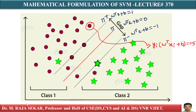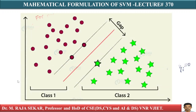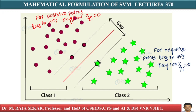We create a new variable ξ. This is very, very important. If positive points lie on the positive side, then ξ is equal to 0. If negative points lie on the negative side, then in that case also ξ is equal to 0. For positive points in this region, ξ equals 0; for negative points in this region, ξ equals 0.